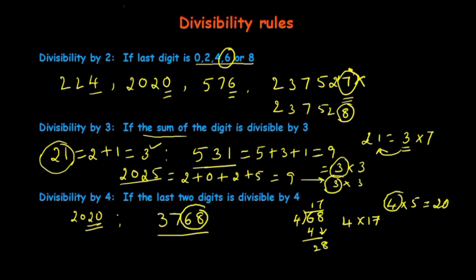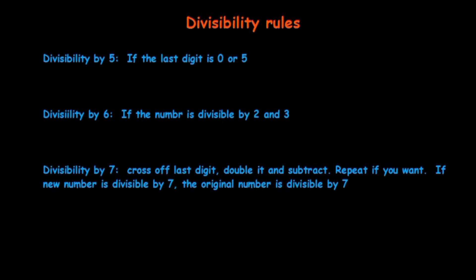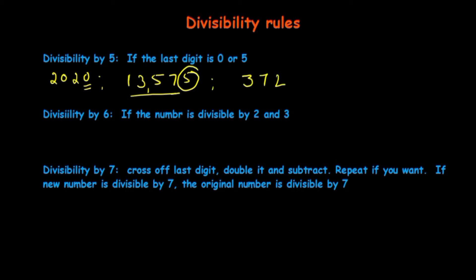Next, divisibility by 5: if the last digit is either 0 or 5, the whole number is divisible by 5. For example, 2020 — last digit is 0, so divisible by 5. Also 13,575 — last digit is 5, so divisible by 5. Similarly, 37,205 — last digit is 5, divisible by 5. And 310 — last digit is 0, so also divisible by 5.